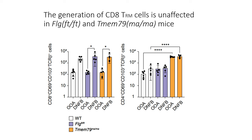As CD8 tissue-resident memory cells play a central role in our model, we next investigated whether the generation of CD8 tissue-resident memory cells was affected in DNFB-sensitized matrin-deficient mice. Interestingly, it was not. However, we found an increased number of CD4 tissue-resident memory cells in matrin-deficient mice.